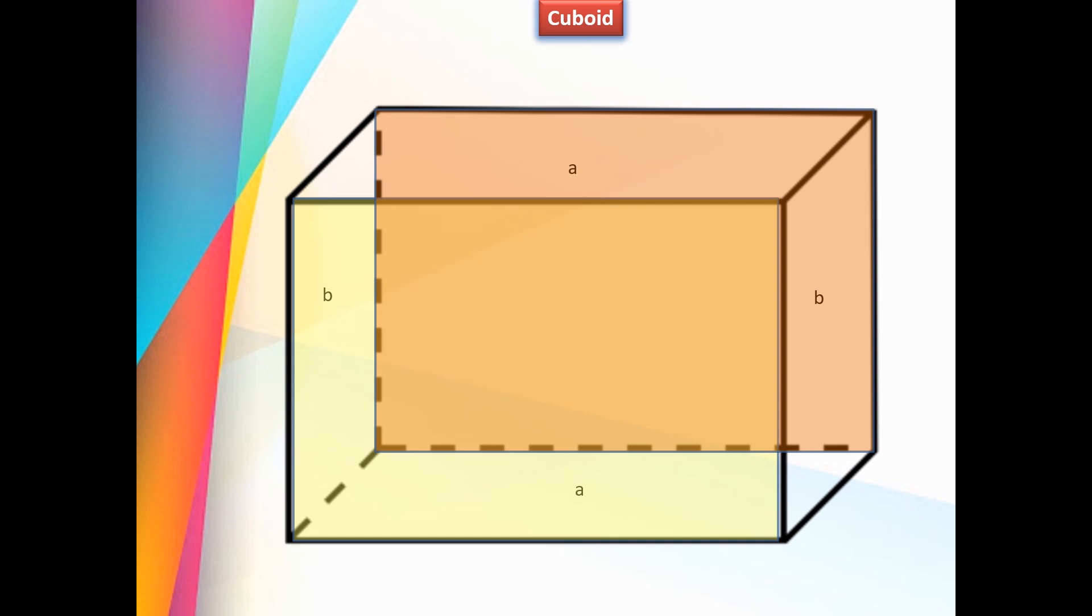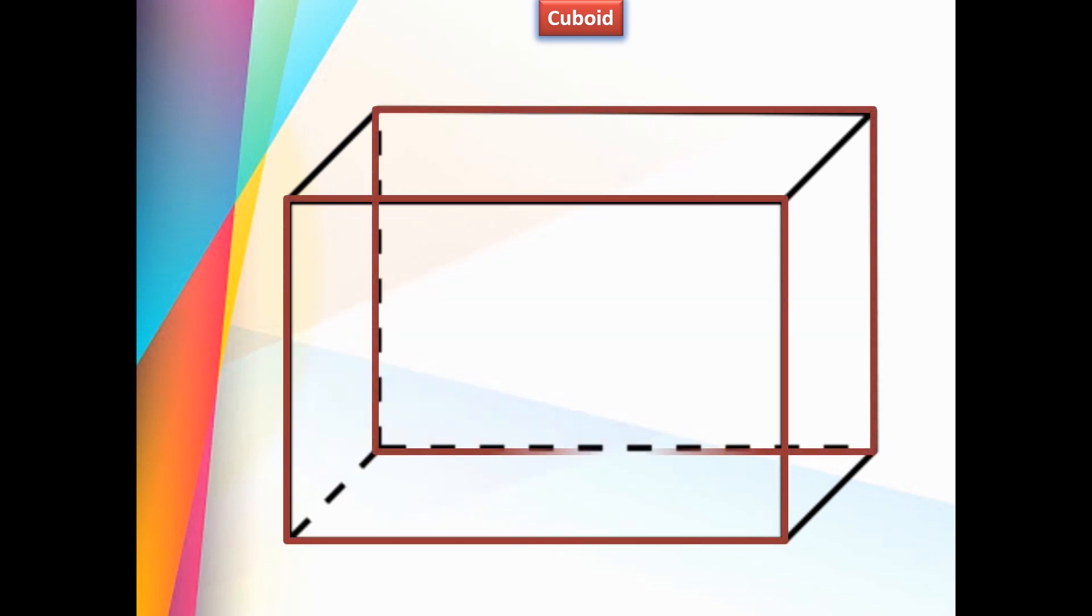There are 12 edges in a cuboid: 1, 2, 3, 4, 5, 6, 7, 8, 9, 10, 11, and 12.